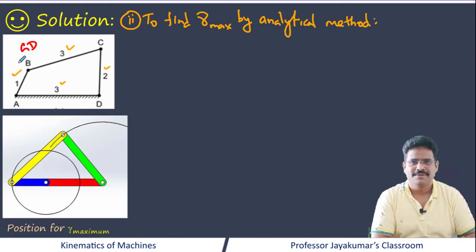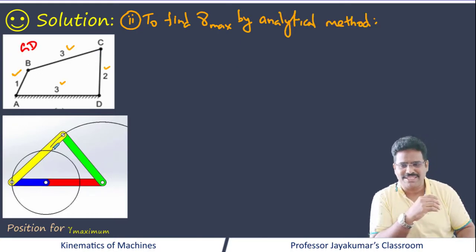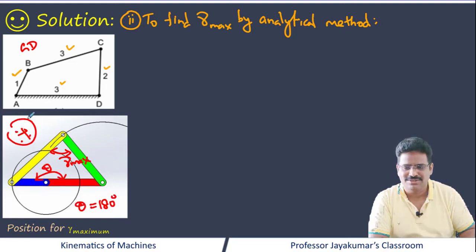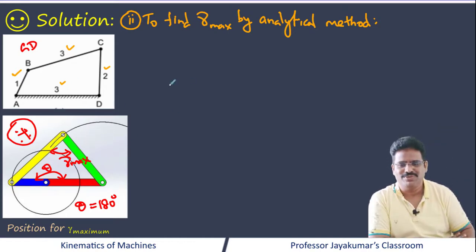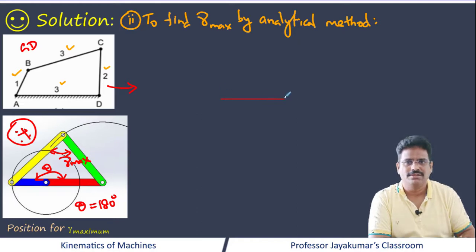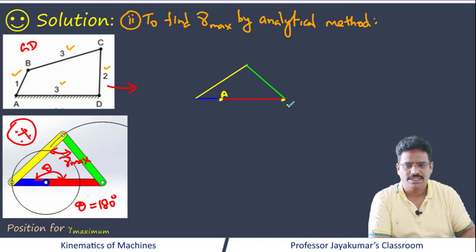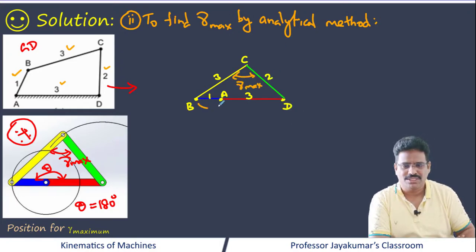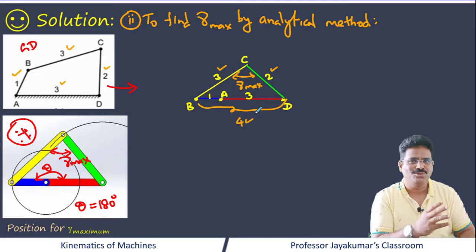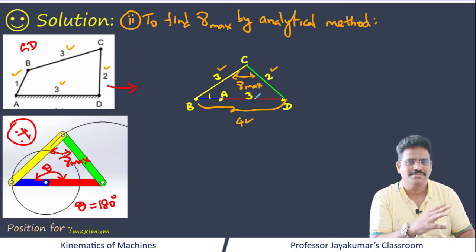When the crank angle is 180 degrees, the transmission angle is maximum. I can draw an equivalent diagram for this configuration. The entire side becomes 3 plus 1 equals 4 units.